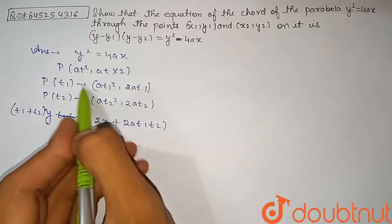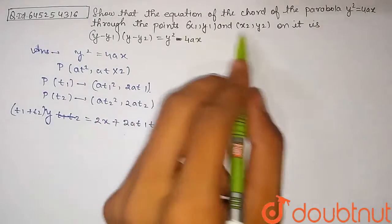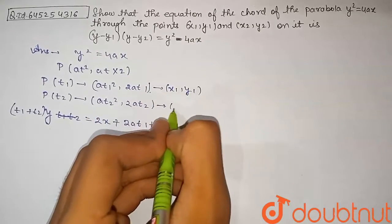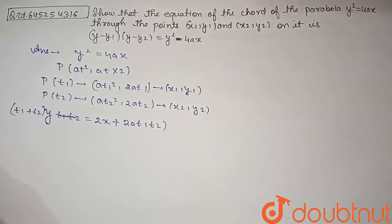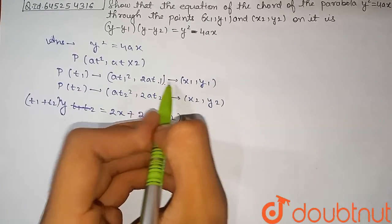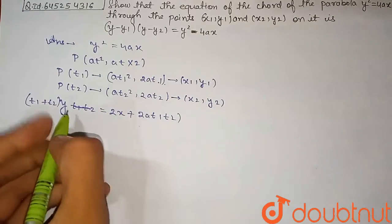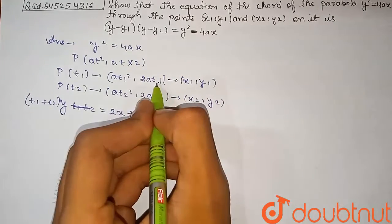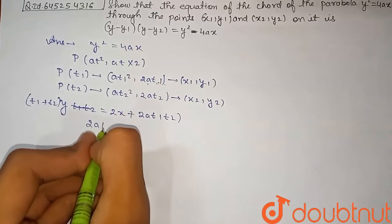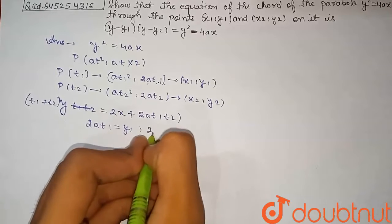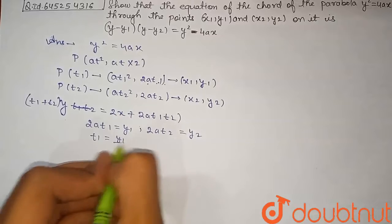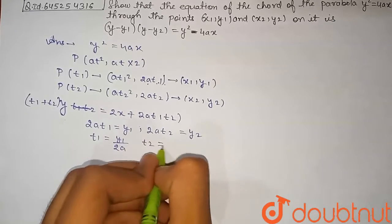Now, P(t1) corresponds to (x1, y1) and P(t2) corresponds to (x2, y2). Substituting these, we find t1 by equating 2at1 = y1, so t1 = y1/(2a). Similarly, 2at2 = y2, so t2 = y2/(2a).